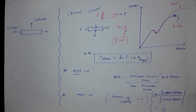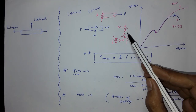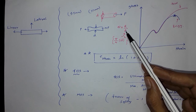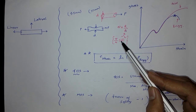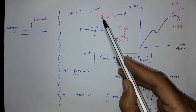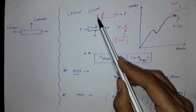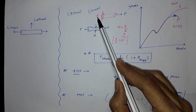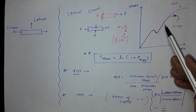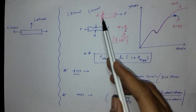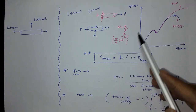Before we talk about engineering stress — in engineering stress, you have to remember one thing: the area value is constant. It means that for drawing this graph, for the rod example, I will consider the area value to be constant, and from that I will draw my graph.